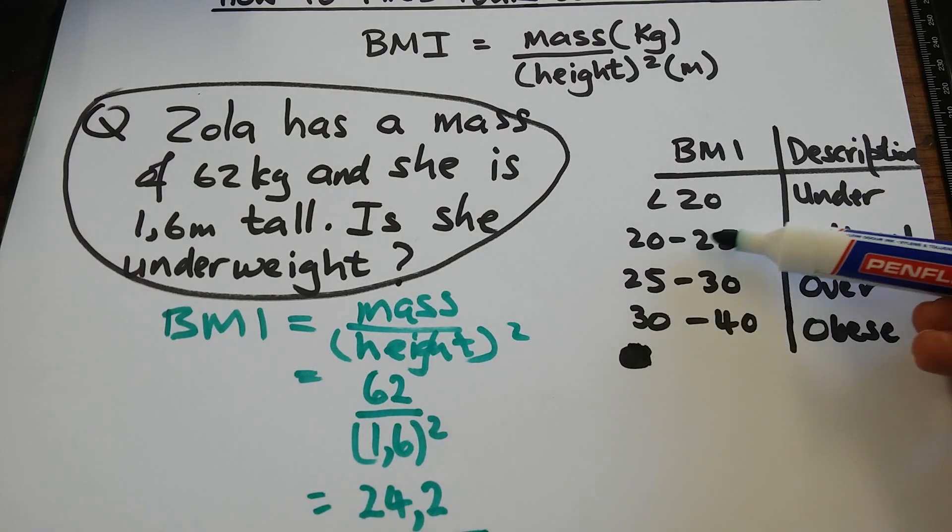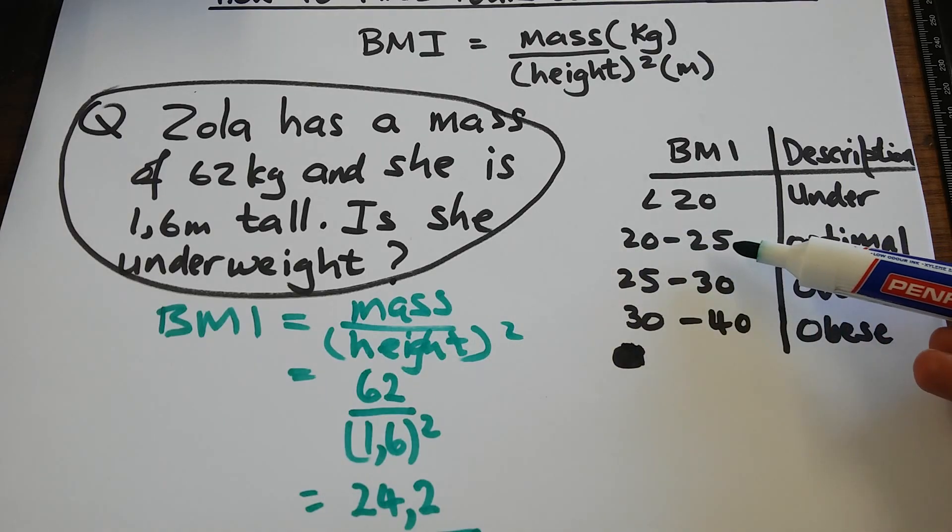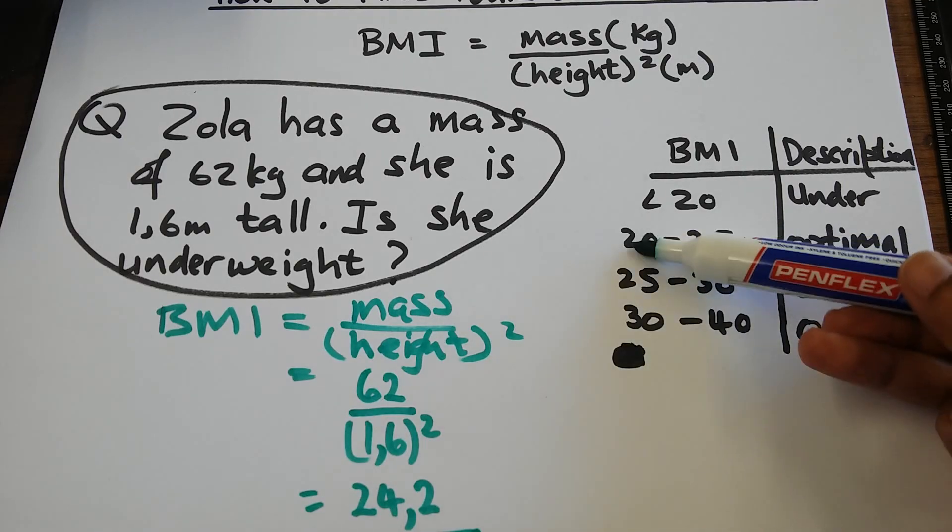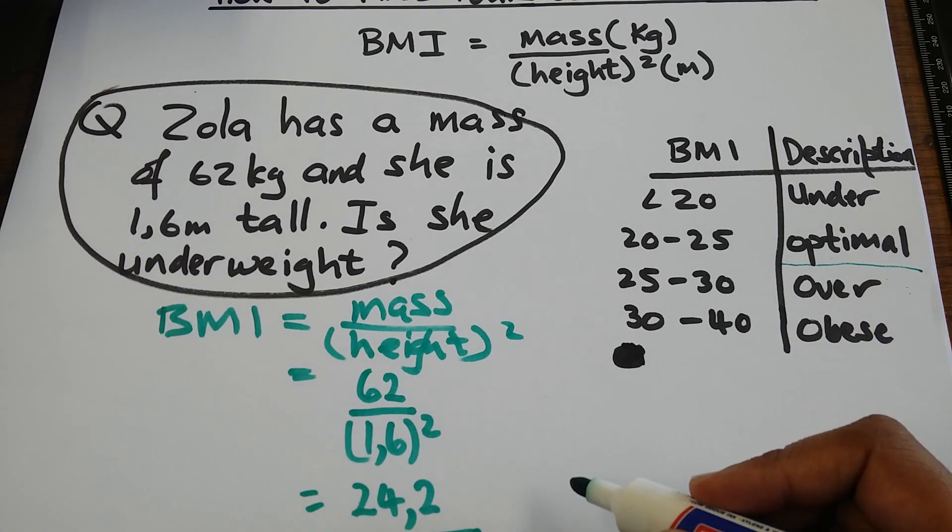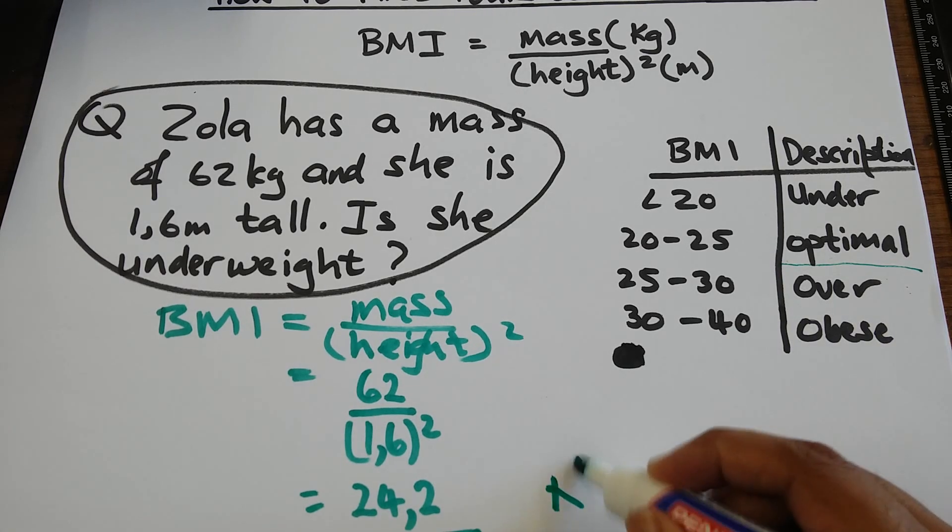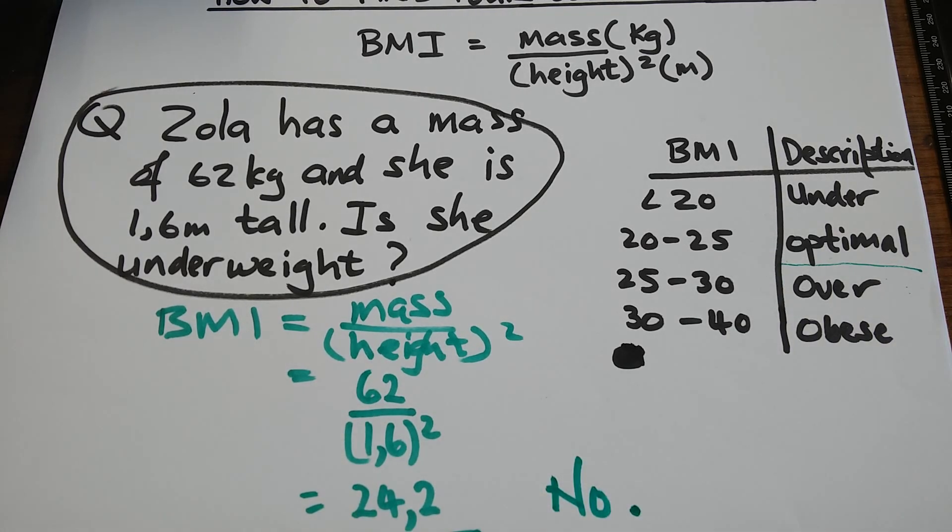Her BMI is in the range 20 to 25. 20 to 25 says optimal. So, to answer the question, is she underweight? No, she is actually at optimal weight.